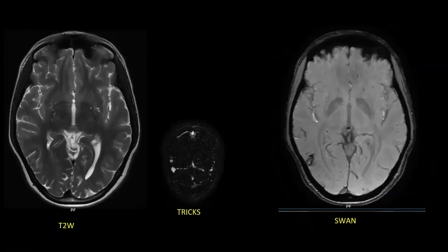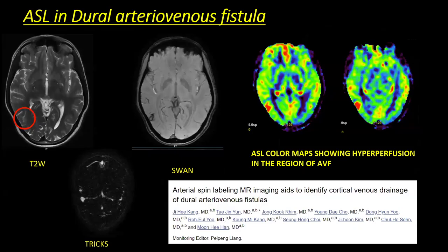Another example: here we see a very small area of abnormality in the right posterior parietal cortical region in the form of a few flow voids. TRICKS — time-resolved imaging of contrast kinetics — was also performed, showing a small abnormal cluster of blood vessels with blooming on SWI images. On the corresponding ASL color map, though this area is very small, ASL picked up hyperperfusion in this region. Literature supports that ASL can detect small vascular malformations like dural AV fistulas, seen as areas of hyperperfusion.